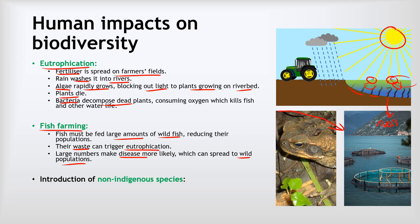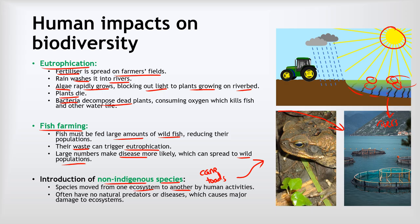The last important harm is about the introduction of what we call non-indigenous species. These are species that have been moved from one ecosystem to another by human activities, sometimes on purpose, sometimes accidentally, but it often has really negative effects. For example, here we can see a cane toad. Cane toads were introduced to Australia from South America many decades ago to help control populations of pests like slugs on farmers' fields. Unfortunately, there is nothing that lives wild in Australia that will eat cane toads, because cane toads secrete a poisonous substance on their skin that will kill anything that tries to eat them. Now these cane toads are really just running out of control, because often non-indigenous species have no natural predators or diseases, which can cause major damage to ecosystems.